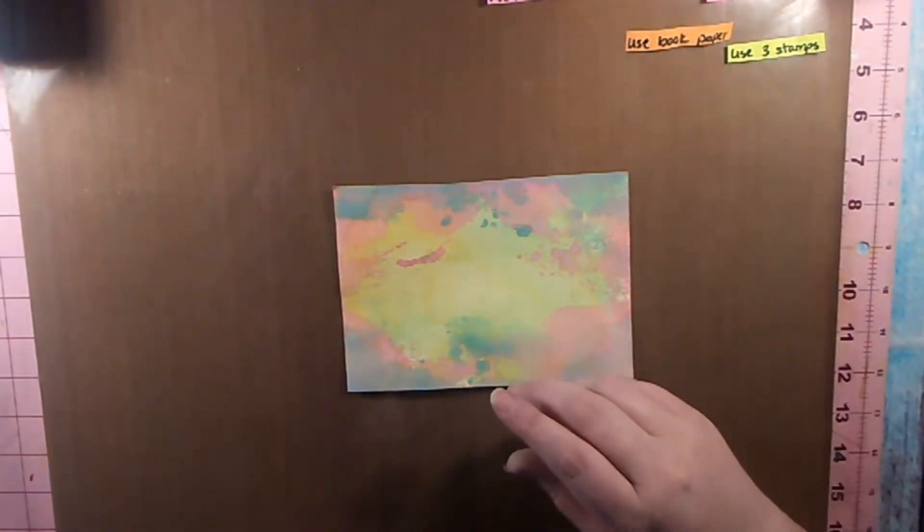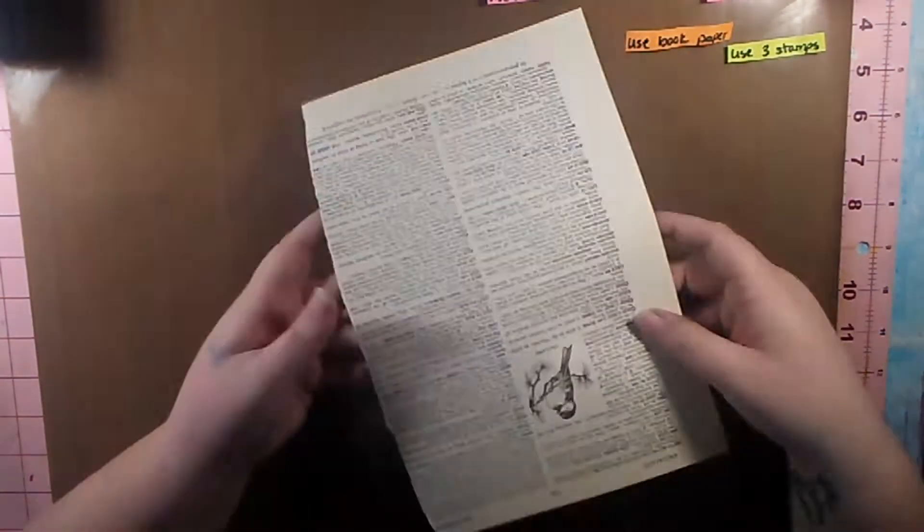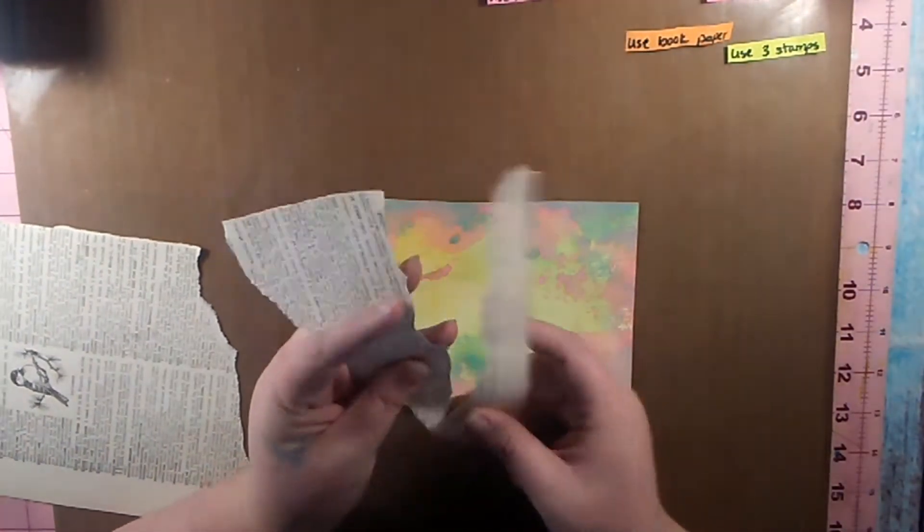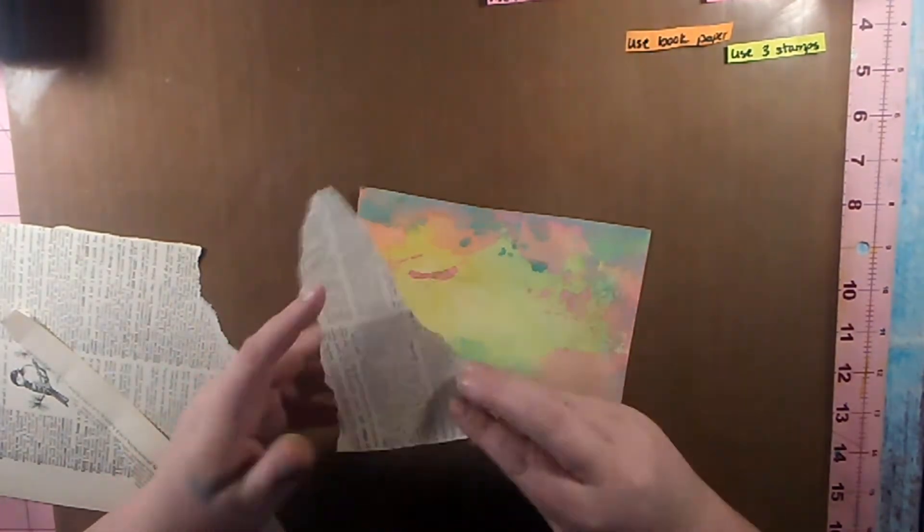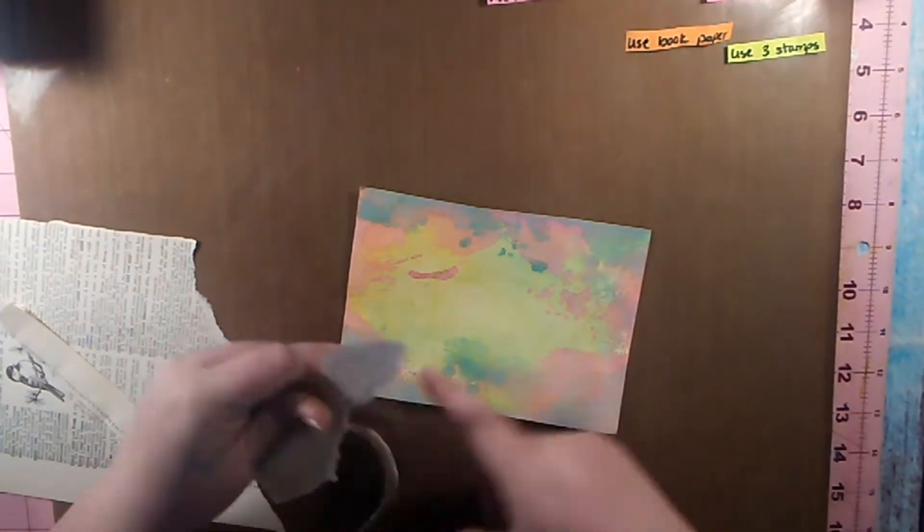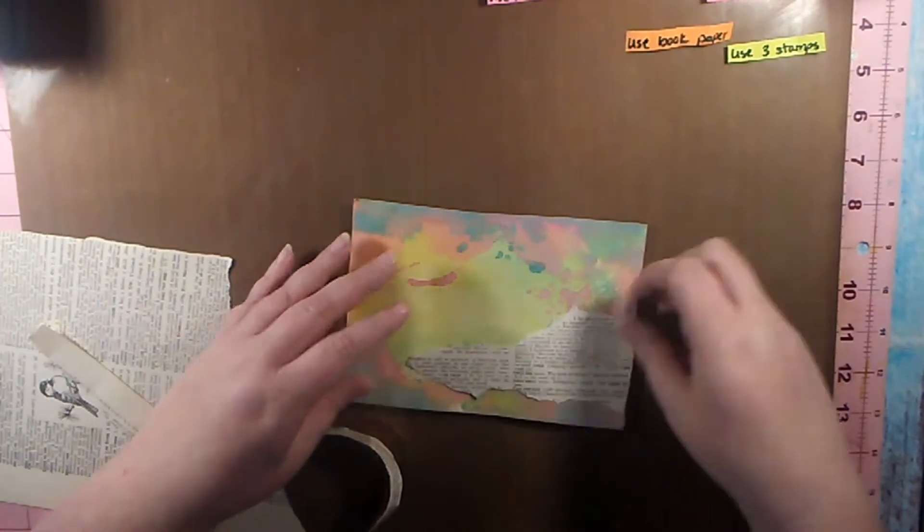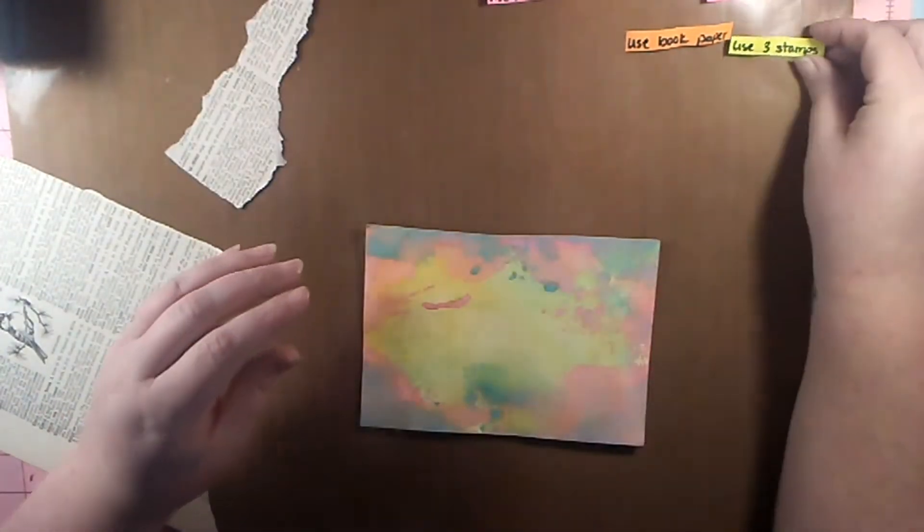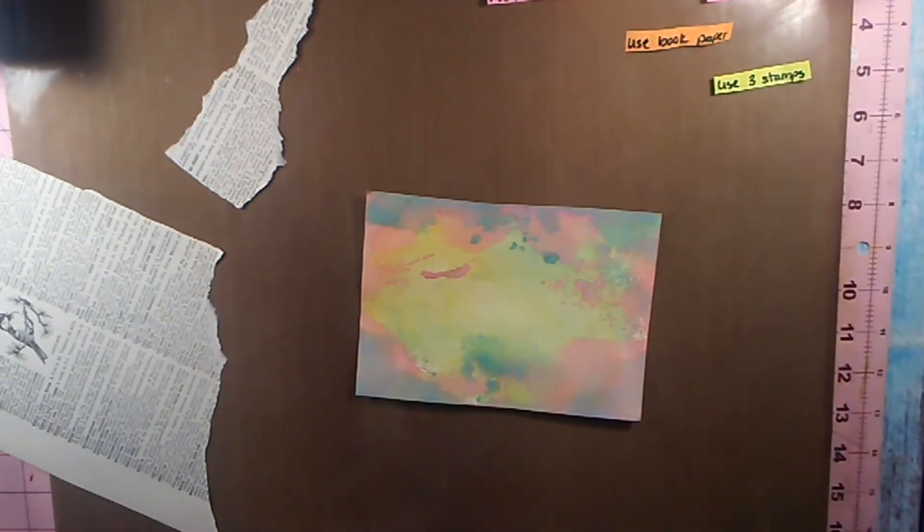I'm going to be taking a piece of dictionary paper and I'm going to tear it apart and place it in various areas around the page. Again, with the Pick 5, I don't know what I'm doing when I'm doing it. It's kind of like playing—you just get in there and create. I really enjoy doing that.